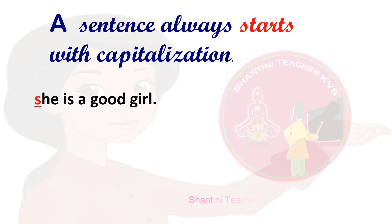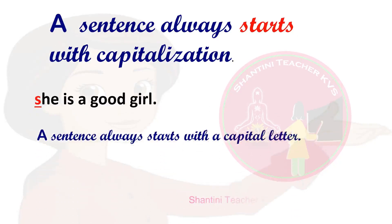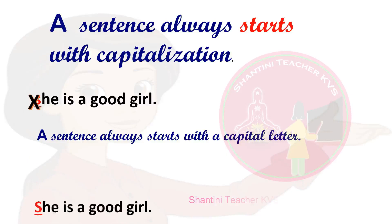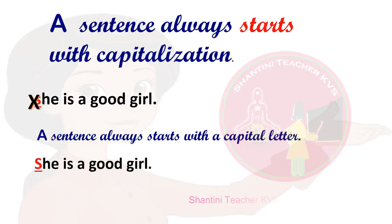'She is a good girl.' What is the mistake in this sentence? Remember, a sentence always starts with a capital letter. But this sentence starts with a small letter. How can we correct the sentence? By uppercasing the first letter of a sentence — that is, by using capital letter S.